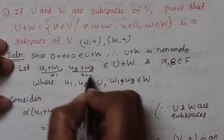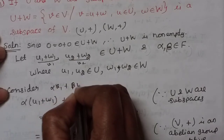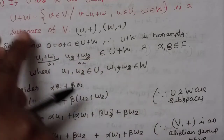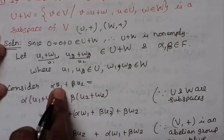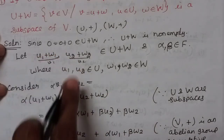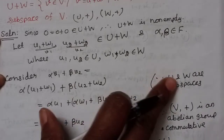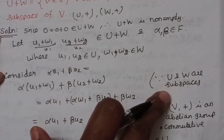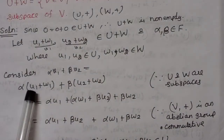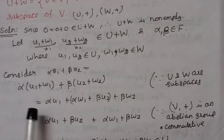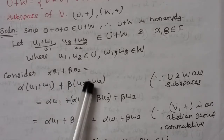Consider alpha·v1 plus beta·v2 equals alpha times (u1 plus w1) plus beta times (u2 plus w2), which equals alpha·u1 plus alpha·w1 plus beta·u2 plus beta·w2.